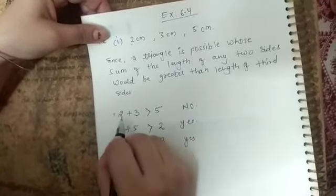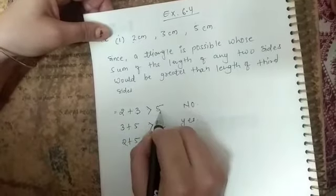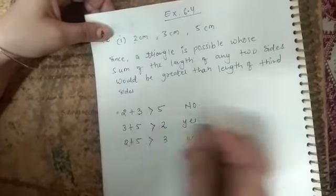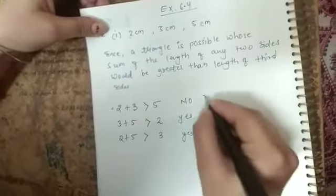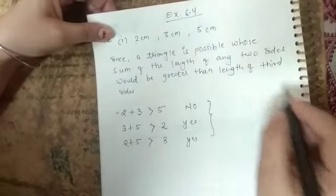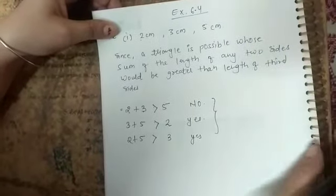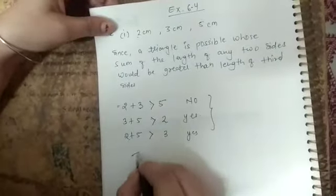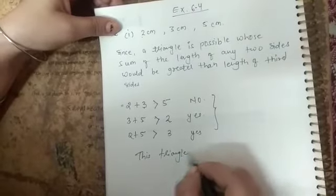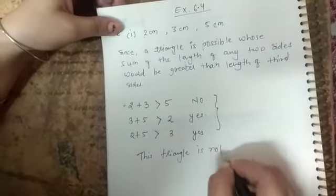But in first case, 2 plus 3 not greater than 5 because 2 plus 3 is 5 and 5 is 5, both are equal. So the property here is not satisfied. So we can say that this triangle is not possible. This triangle is not possible.